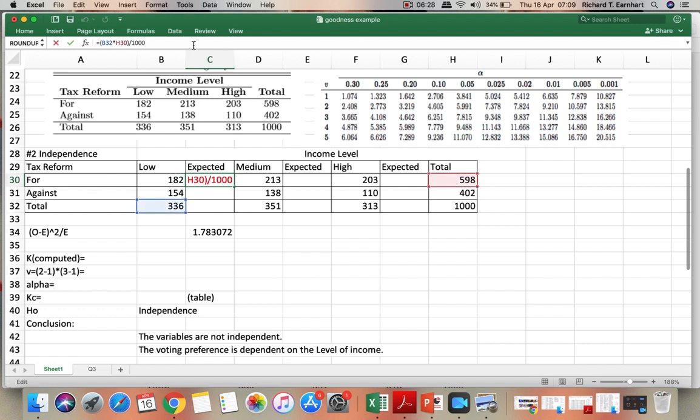The expected value for low income and then in favor of the tax reform - multiply the column total, and then the row total, and then divide by 1,000. For against and low income...